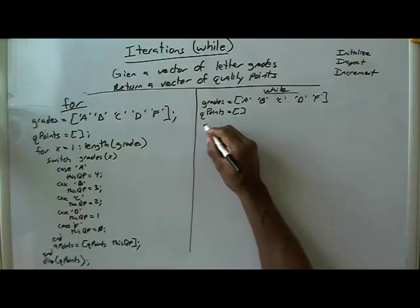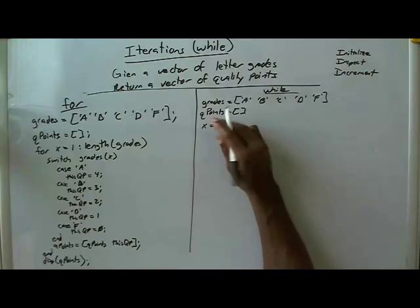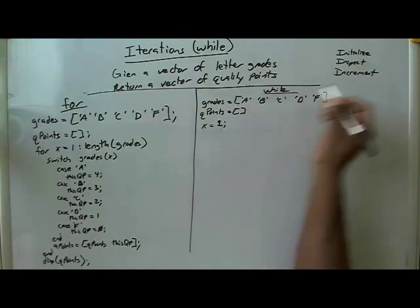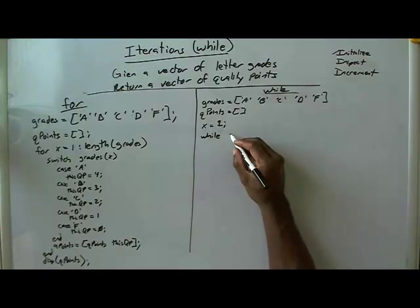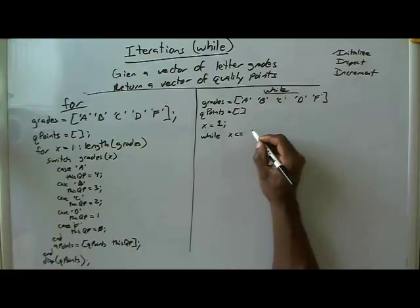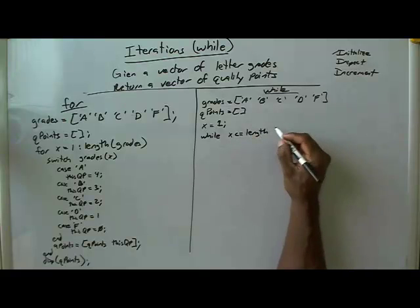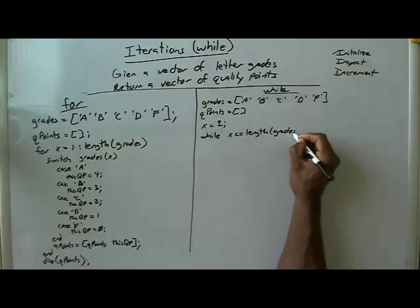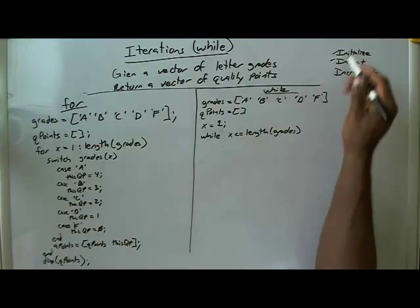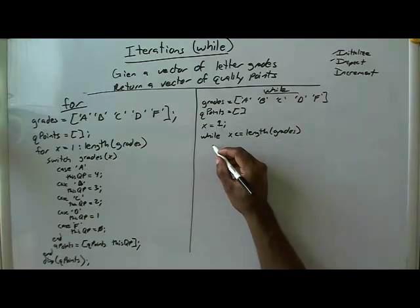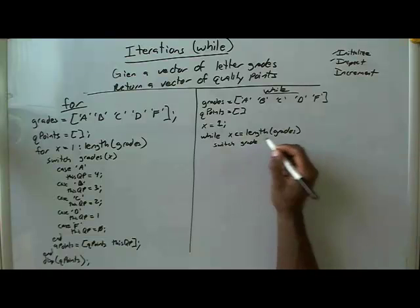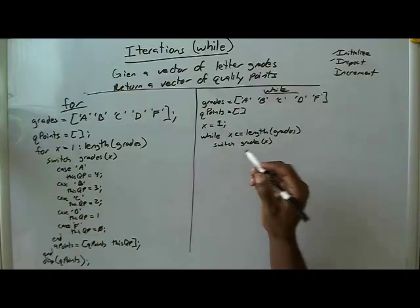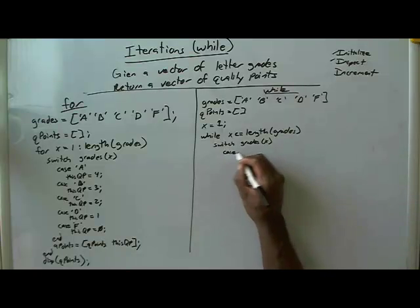We have to initialize our loop variable X. We're going to start off with X equaling 1 — that takes care of initializing. Then we're going to set up our while loop and check that X is less than or equal to the length of grades. This is our inspection that we'll do every time through the while loop. Next, we'll start our switch statement as we did before, and switch on grades indexed at X — that's our indexing method.